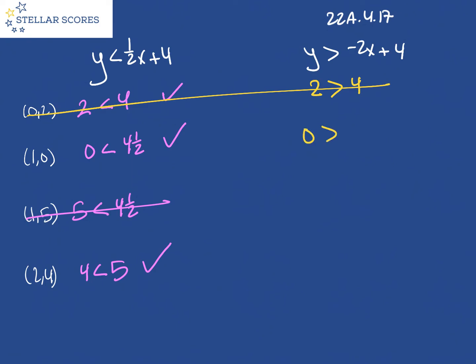Zero is greater than negative two plus four, which is two. Zero is greater than two. Nope, that doesn't work. That one's out.